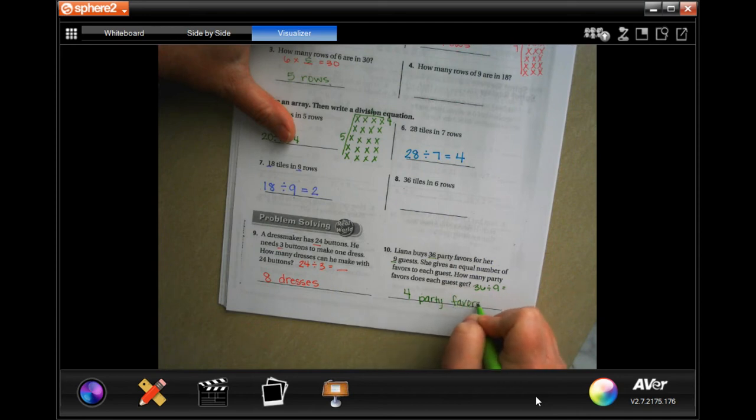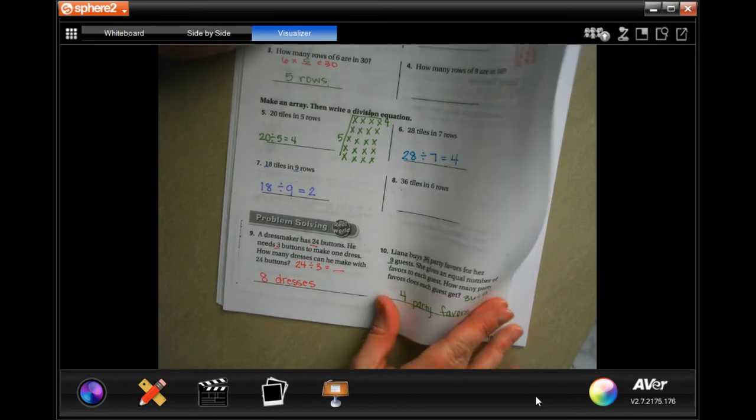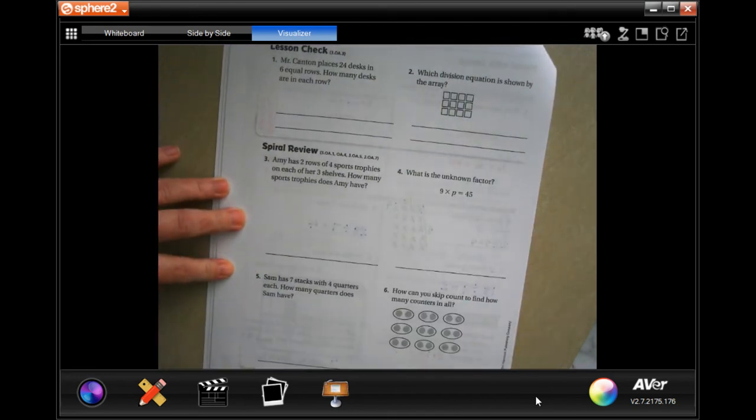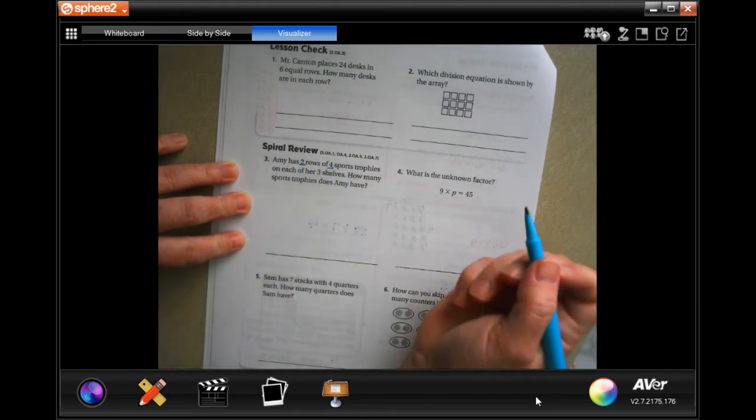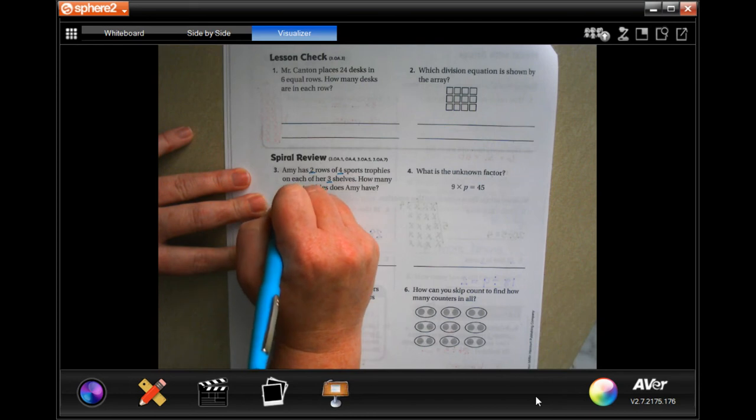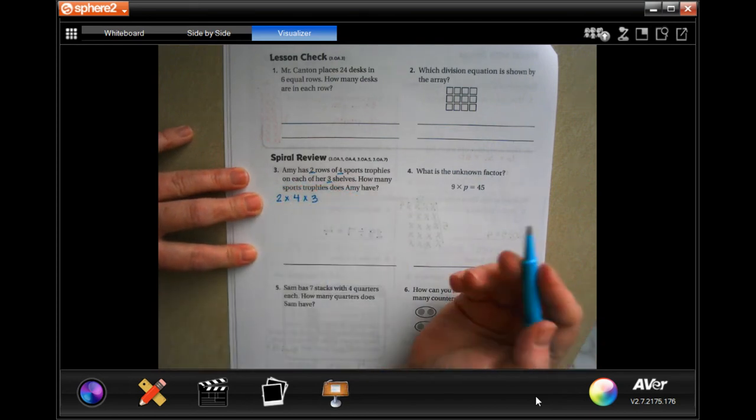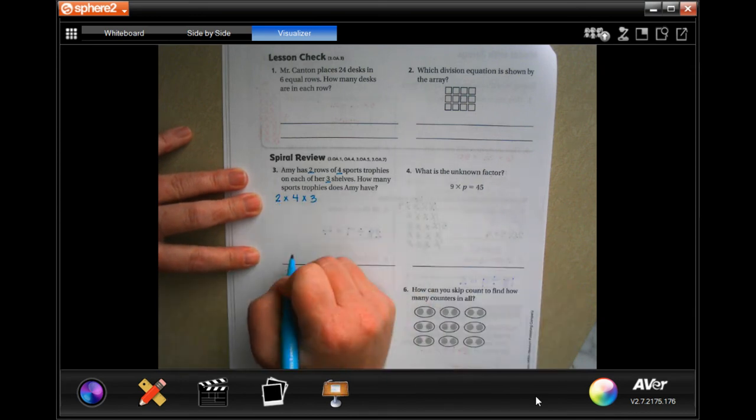Okay, so we're going to go on to the back where you guys are going to do a lesson check just like always, and we're going to do the spiral review. Amy has two rows of four sports trophies on each of her three shelves. So two times four times three. How many sports trophies does she have? Well two times four is eight. Eight times three is 24 trophies.